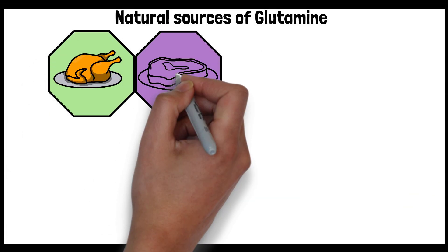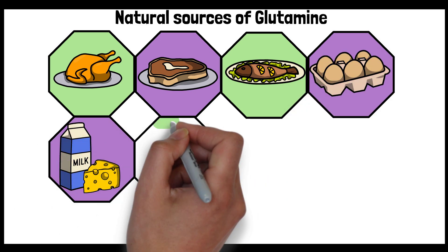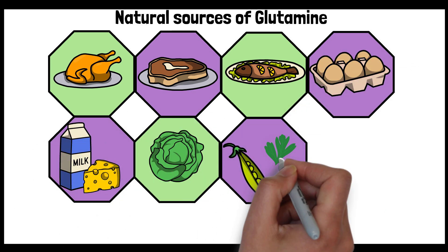Some great sources of glutamine are chicken and turkey, beef, fish, eggs, dairy products, and plant sources such as cabbage, peas, parsley, beans, and legumes.